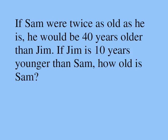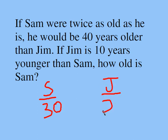So we concluded that Sam is 30 years old. Now, according to the question, Jim is 10 years younger than Sam, so Jim has to be 20. Now, if Sam were to be twice as old, he would be 60. And look, 60 is 40 years more than 20. So it seems to work out.